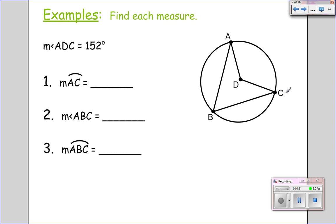The measure of angle ADC is 152 degrees. Now ask yourself. What type of angle is angle ADC? Well it's in the center. So it's a central angle.